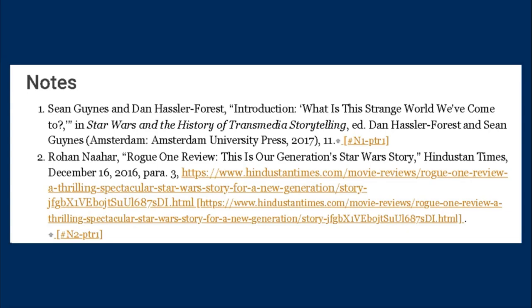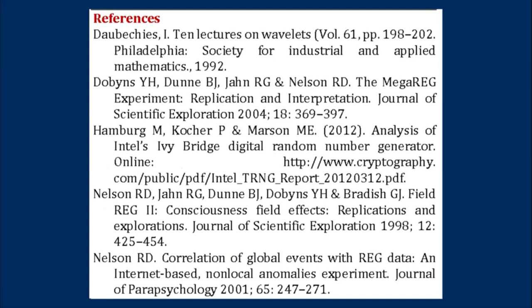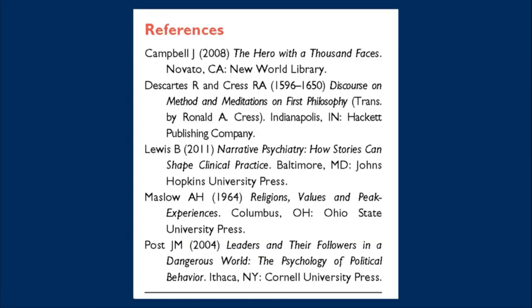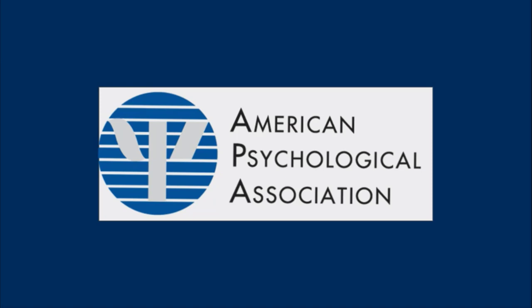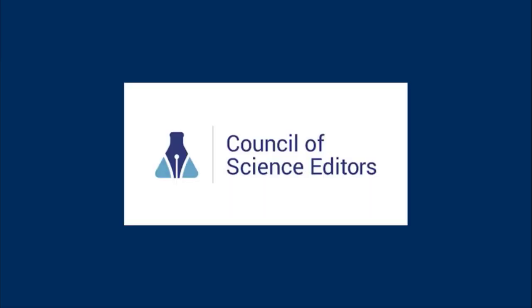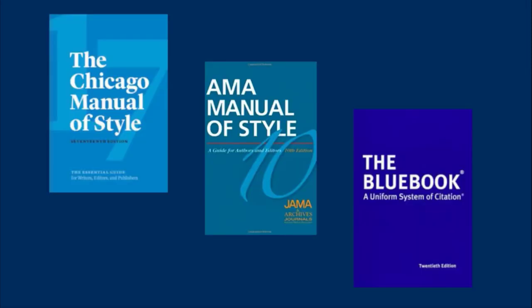You will see citations in all academic journal articles, but you might notice that they sometimes look different depending on the sources that you use. This is because there are different citation styles created for specific disciplines. For example, MLA is the citation style of the Modern Language Association and is often used in English journals. The American Psychological Association's APA style is used most often in social sciences like psychology and criminal justice, while the Council of Science Editors' CSE style is used in the biological sciences. You might also see other citation styles like AMA, Chicago, and Bluebook in your research journey.